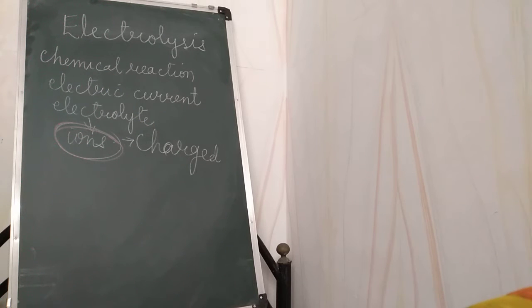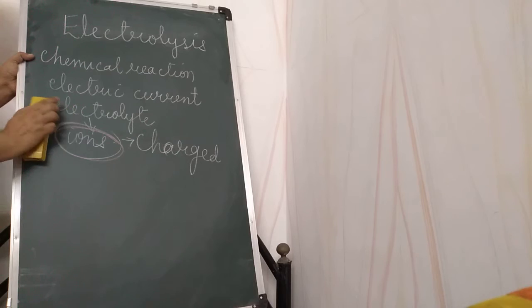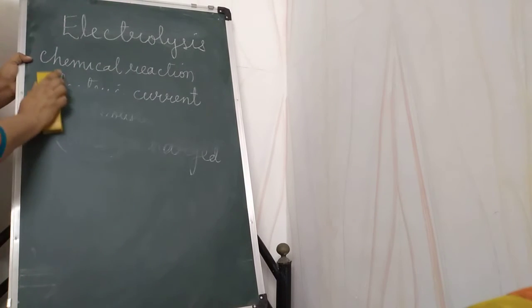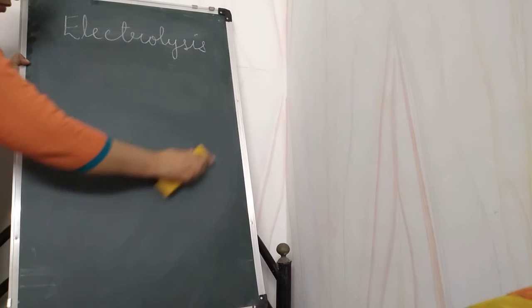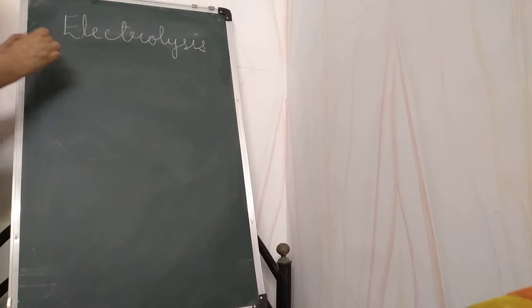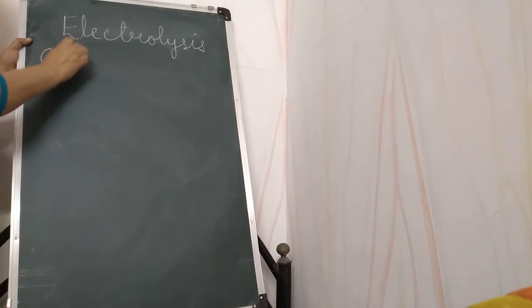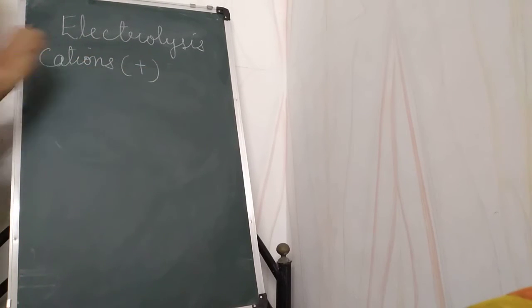There are positively charged ions and negatively charged ions. The positively charged ions are known as cations.